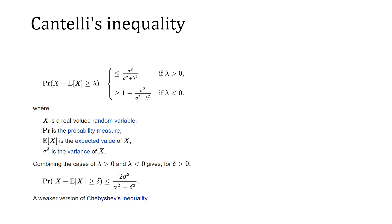Let's read the statement. The probability that X minus the expectation of X is greater than λ can be bounded by this expression when λ is greater than zero, and by this one when λ is less than zero. To prove it, we only need to prove the first part, because if we prove the bound for λ greater than zero, the λ less than zero case follows. Here σ² is the variance. Combining both cases gives the result. This is actually a weaker version of the Chebyshev inequality — for Chebyshev you get something like one over the variance squared.